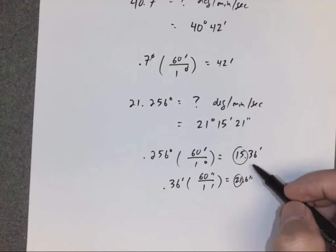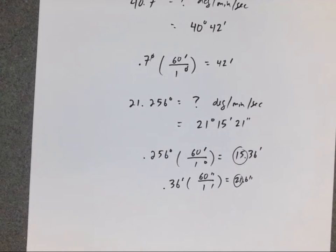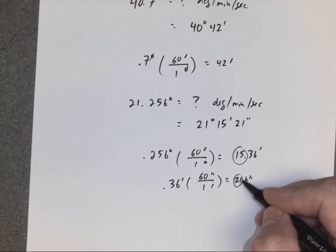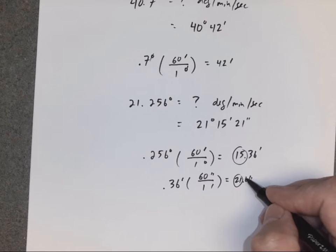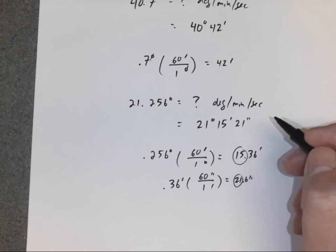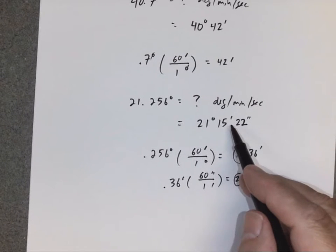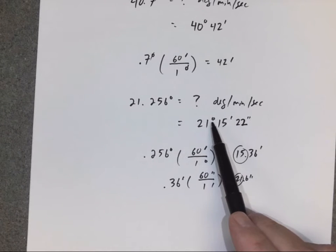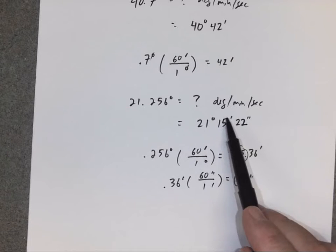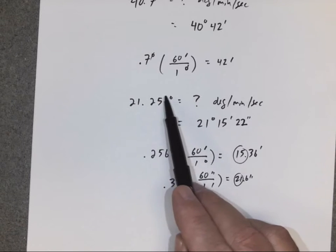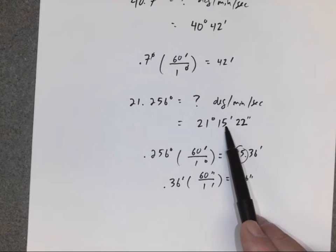Since we have 21.6 seconds, we round to the nearest whole second. Because 0.6 is 5 or above, we round up to 22 seconds. So the final answer is: 21.256 degrees equals 21 degrees, 15 minutes, 22 seconds.